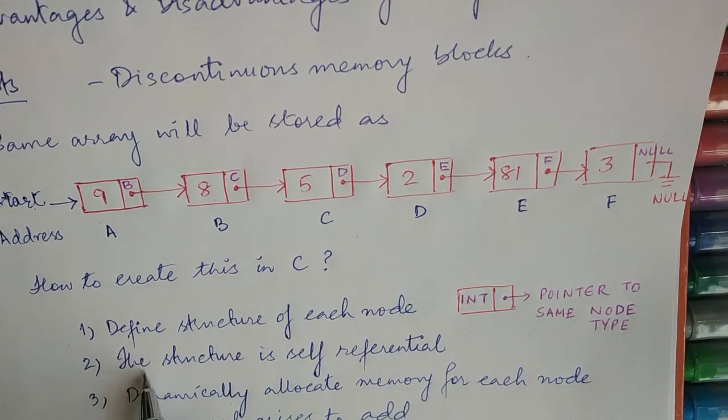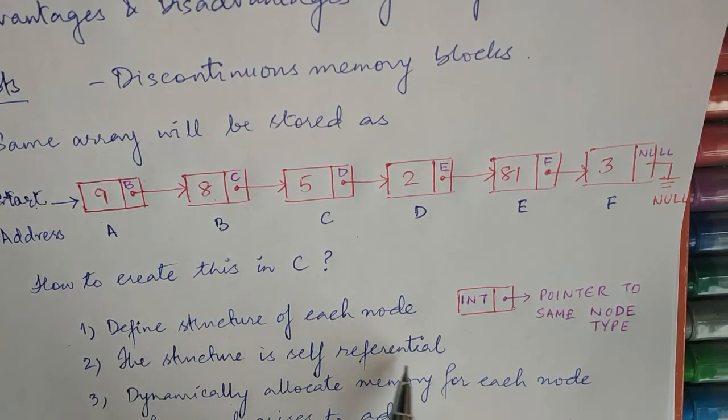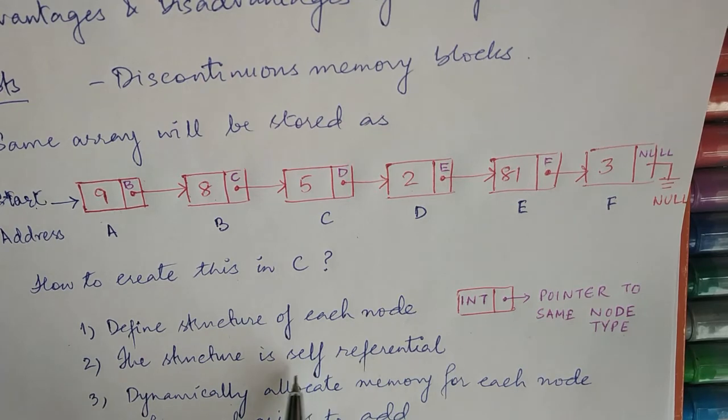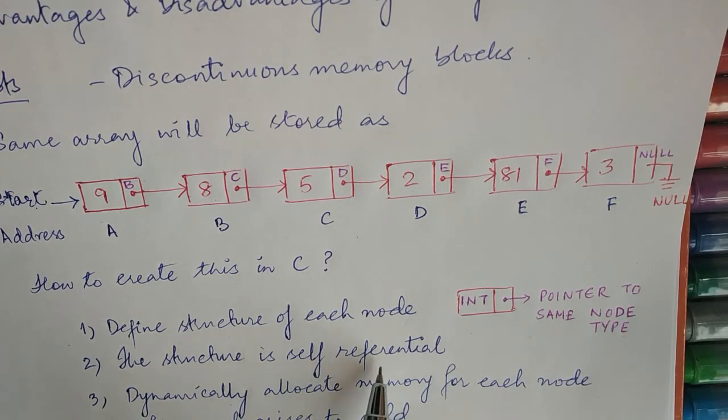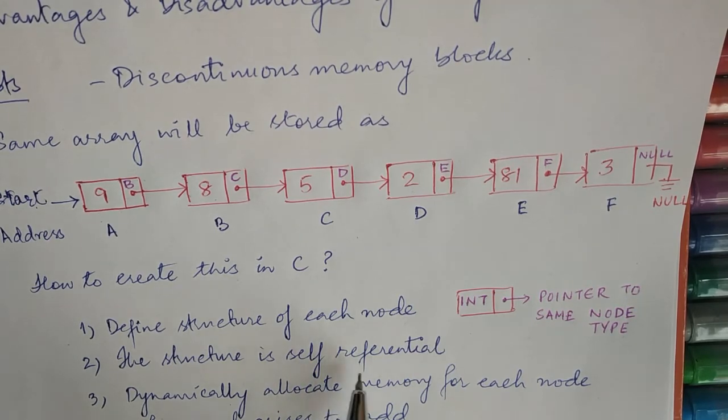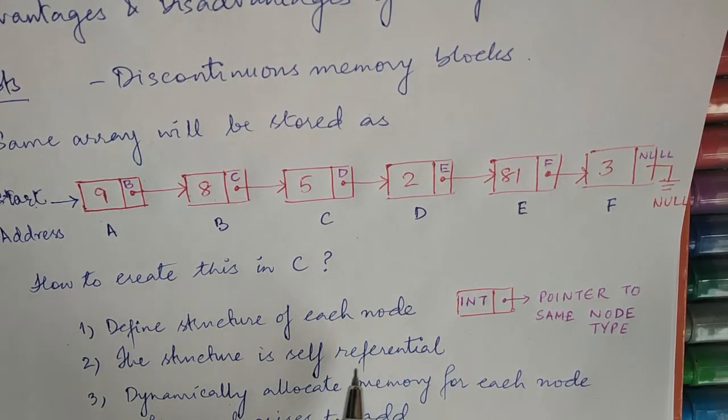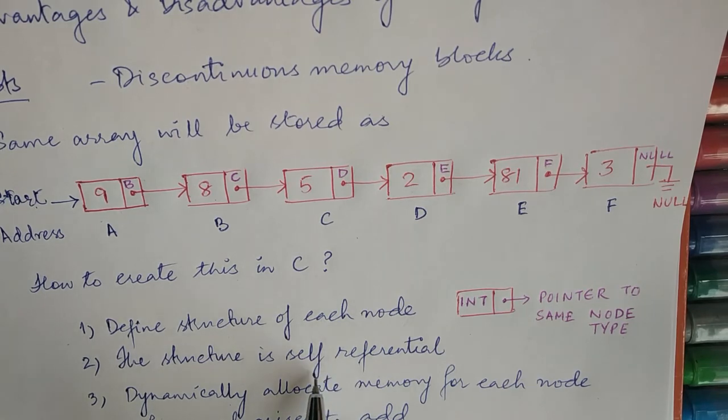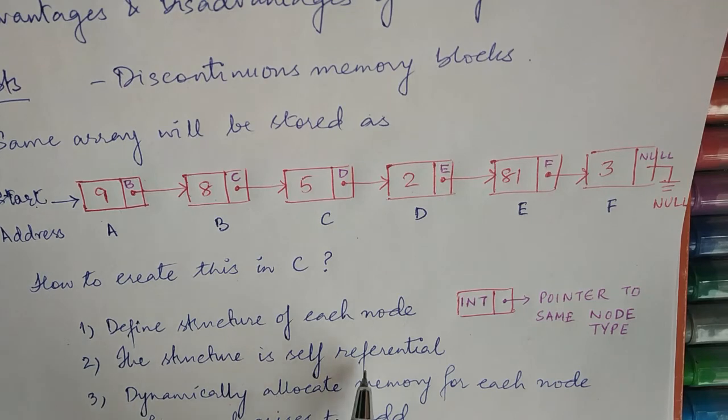So first of all, we define the structure of each node. For us it is int and a pointer to same node type. The structure is self-referential. You must have gone through the initial notes. A self-referential structure is one in which before we complete the definition of your structure itself, we put another field which is a pointer to the same structure.